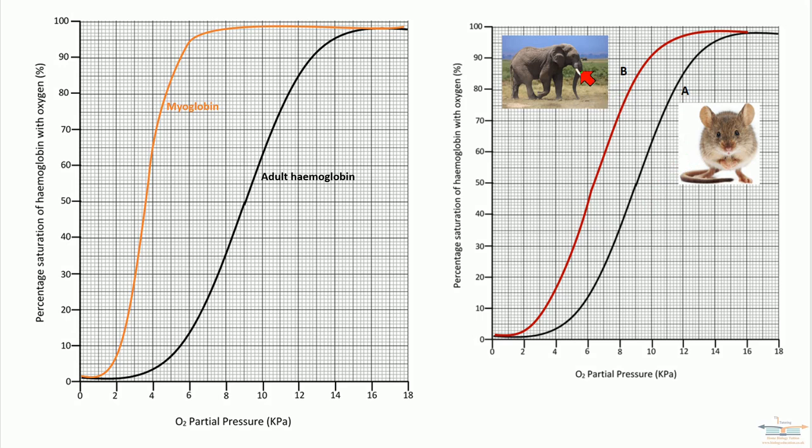With the elephant, because it doesn't lose as much heat from its body surface, it doesn't have to do as much aerobic respiration to generate heat to replace the heat that's lost. So, it doesn't have to have a lower affinity haemoglobin.